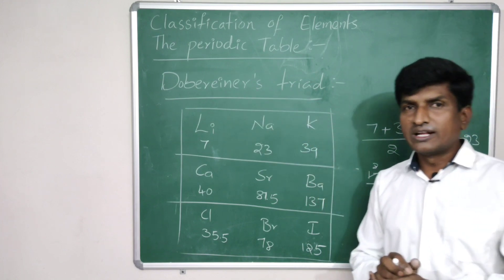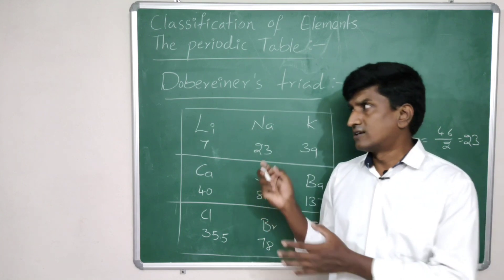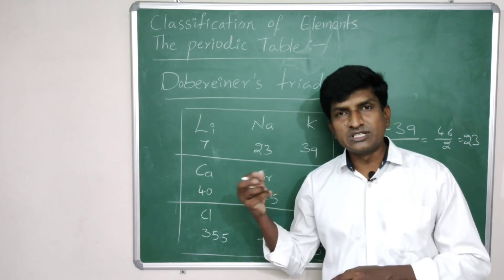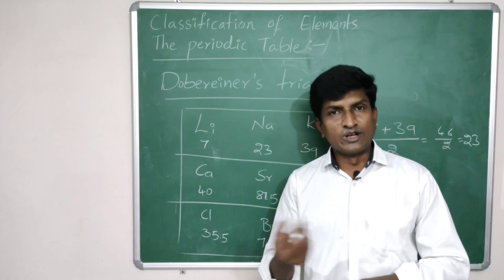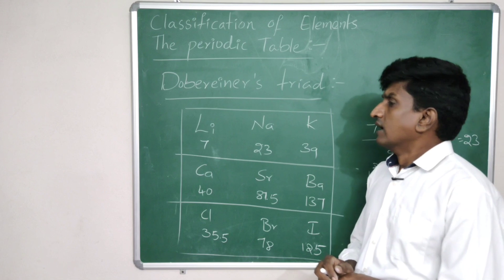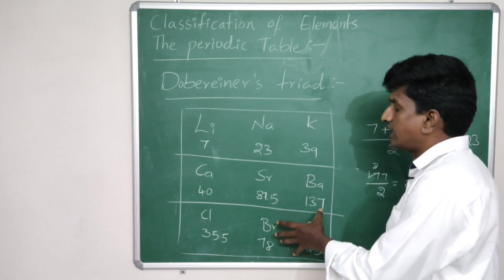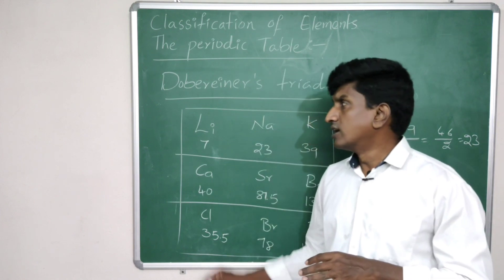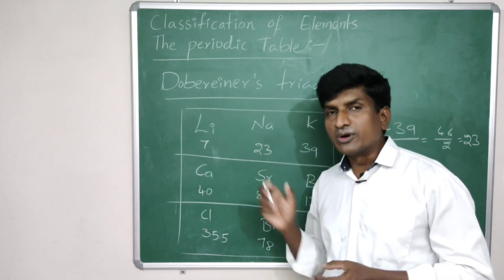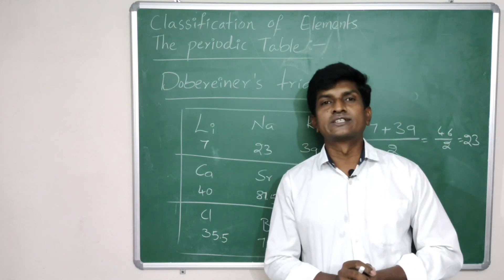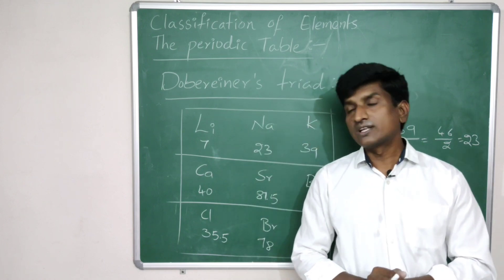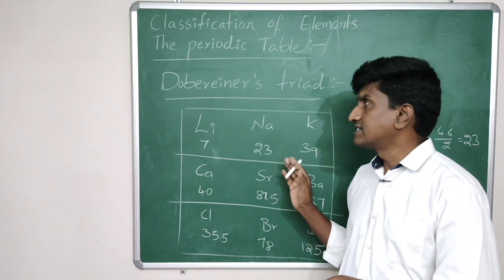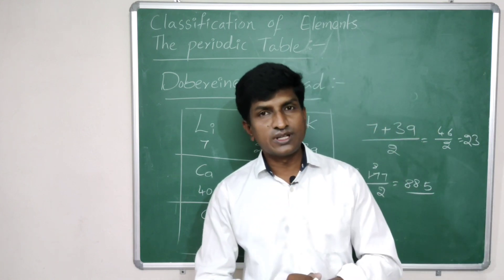However, there are limitations to Dobereiner's classification. First, it is not applicable to elements with very low or very high atomic weights. Second, Dobereiner could not classify all the elements into triads. Third, after improvement of new techniques and more accurate atomic weight measurements, some triads did not hold up. These are the main drawbacks of Dobereiner's triads.